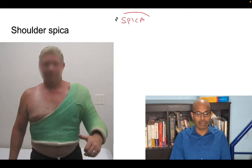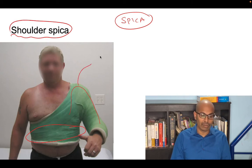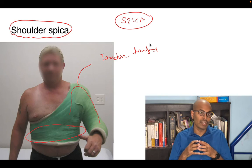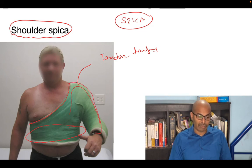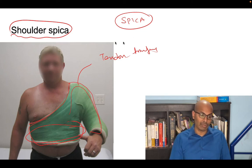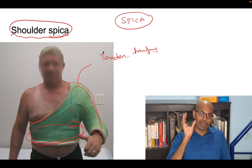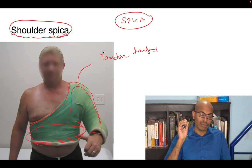A spica is a cast that wraps circumferentially around the trunk. The shoulder spica covers the shoulder, arm, and forearm and is used for tendon transfers, shoulder arthrodesis, multiple shoulder injuries, and brachial plexus injuries. Any spica rolls around the body and includes the relevant limb.